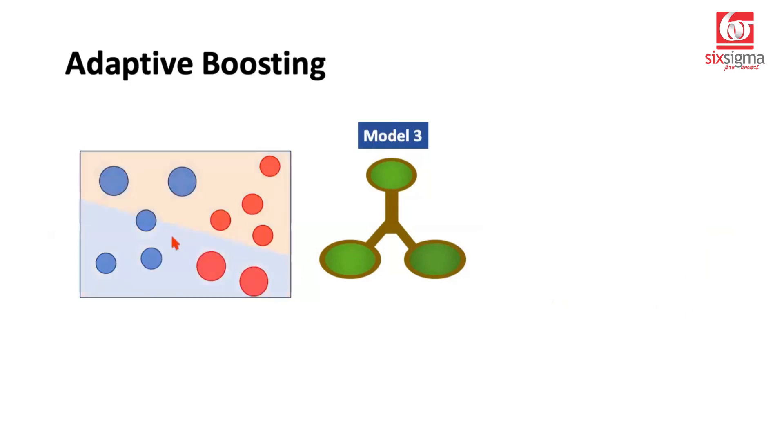So we go to model 3 and this is how our data is looking like right now. Model 3 would further try to do a classification. Let's say this is how model 3 works. So model 3 was able to draw a line where it was able to fix some of these errors.